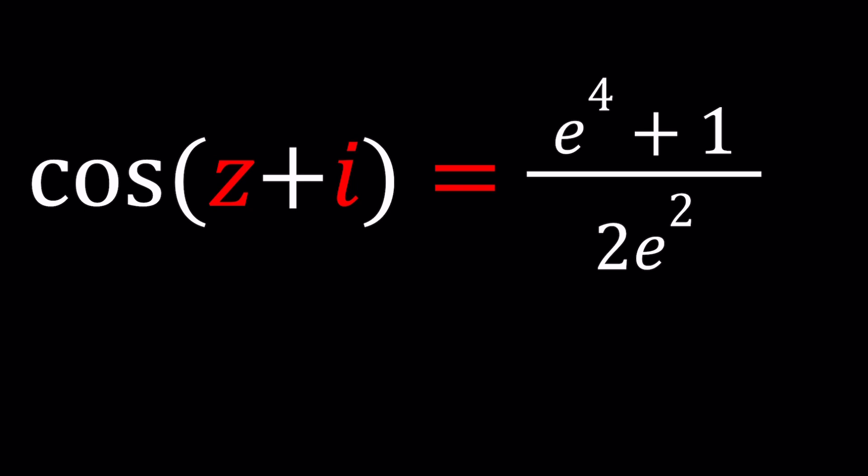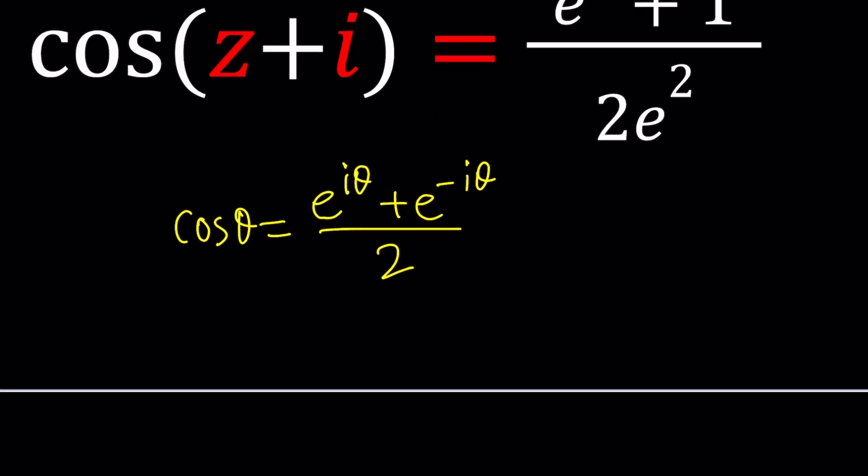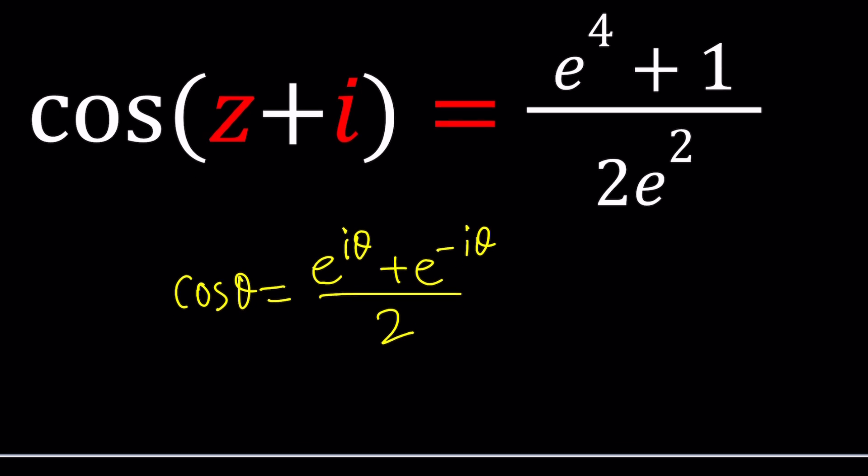Thanks to Euler we have a formula that we can use. What is that formula? Let me quickly give you the formula first and I'll tell you where I got that from: cosine of theta can be written as e to the i theta plus e to the negative i theta divided by two. And by the way theta does not have to be real. This is true for all complex values of theta. So where does this come from? Good question.